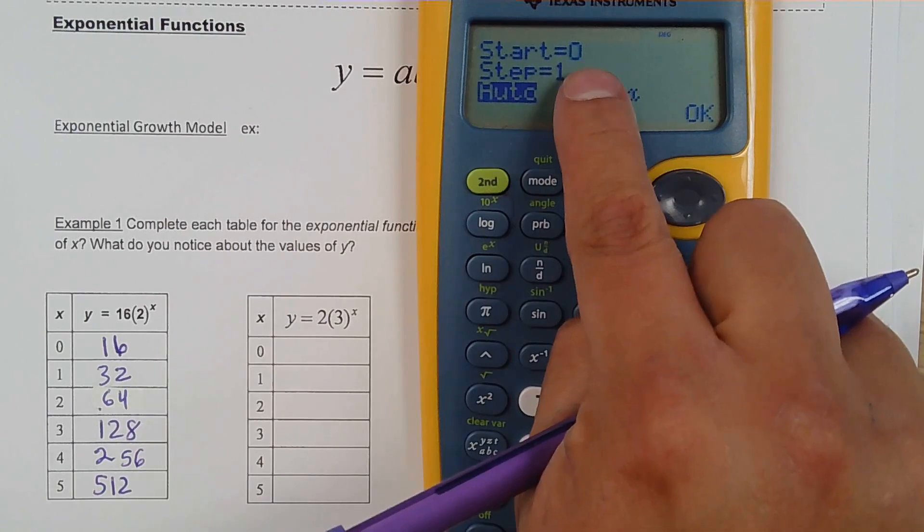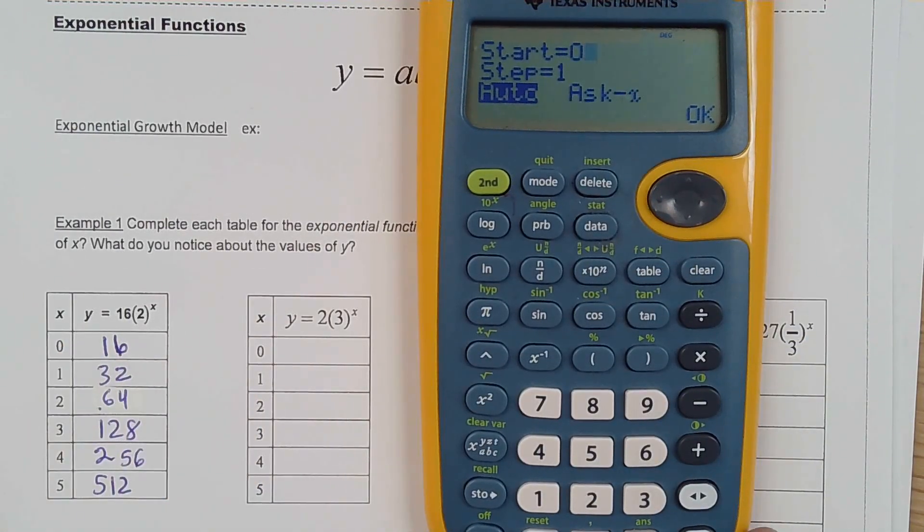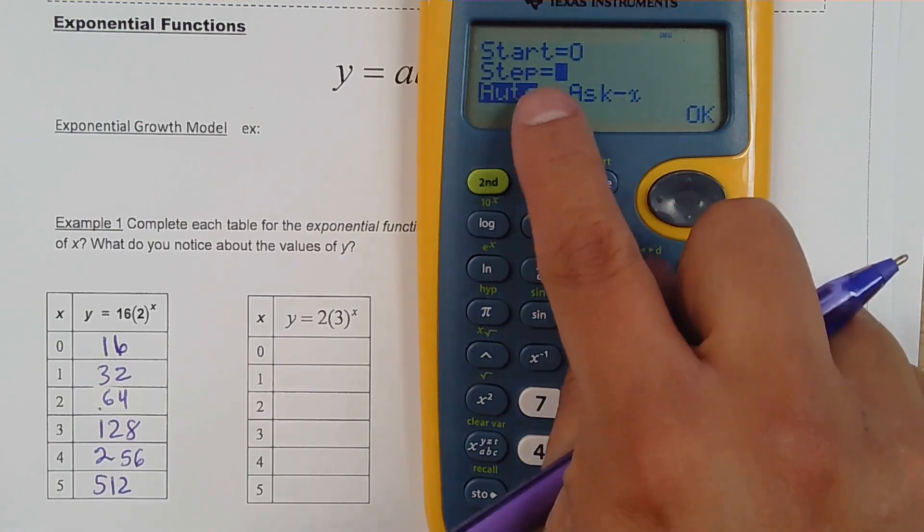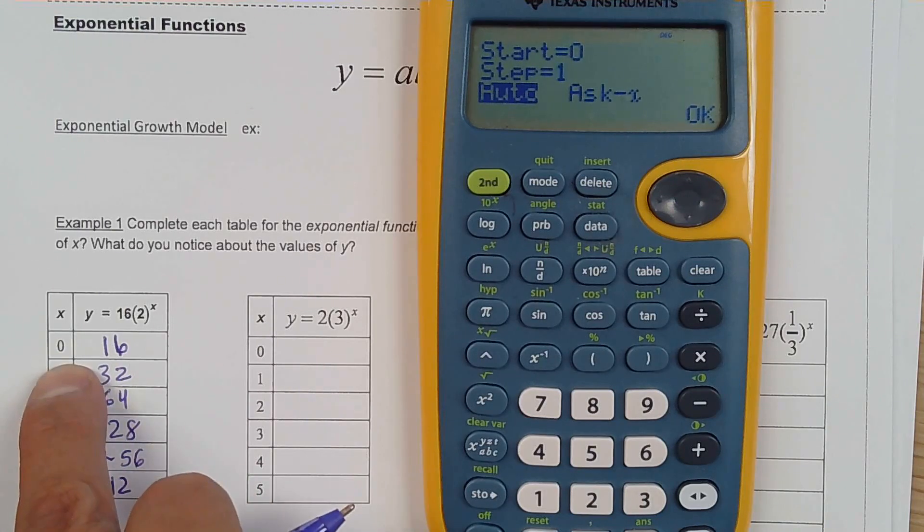It's going to ask you where your starting point is. In this case it's 0 not 1. So you put 0. It's going to ask you the steps or the increments. Well it's incrementing by 1. If this was like 2, 4, 6 then you put step by 2.